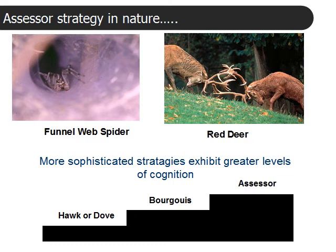The first example is the funnel-web spider. Remember, the assessor finds out who's the bigger opponent. What funnel-web spiders do is bounce around on the web. They have the intelligence to do that because the physical dynamics of a web behave in a similar way to a scale. Essentially, the two spiders about to enter into a contest are weighing one another, and the smaller of the spiders will leave.